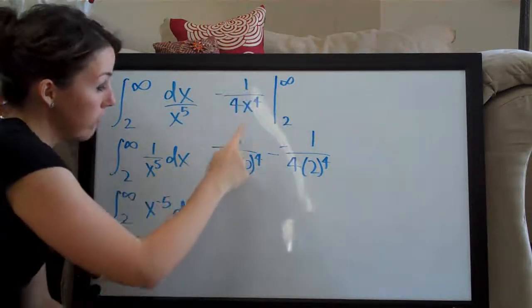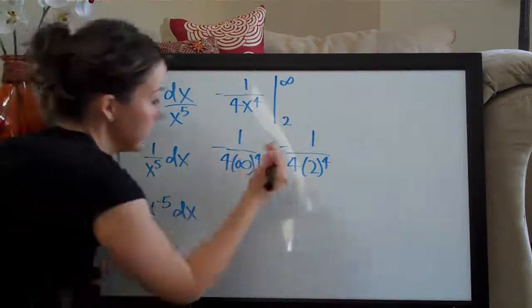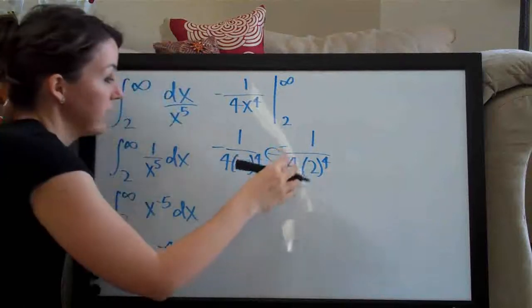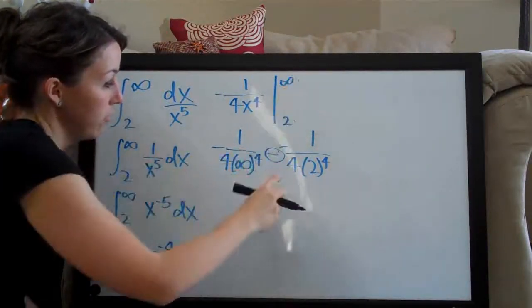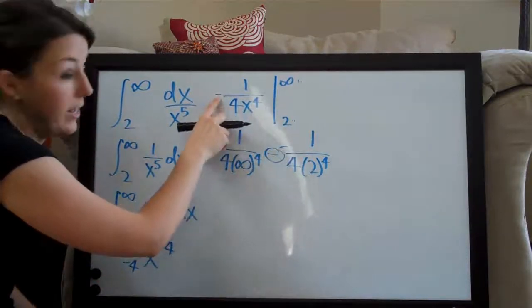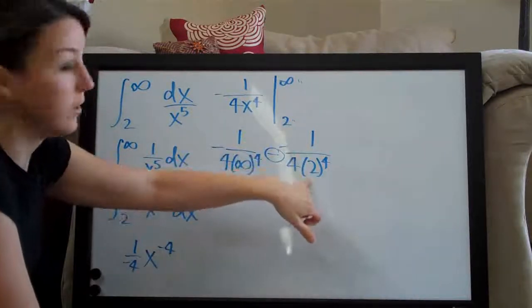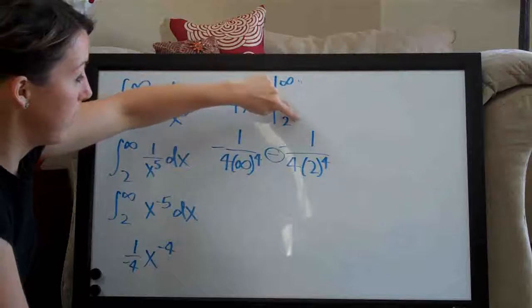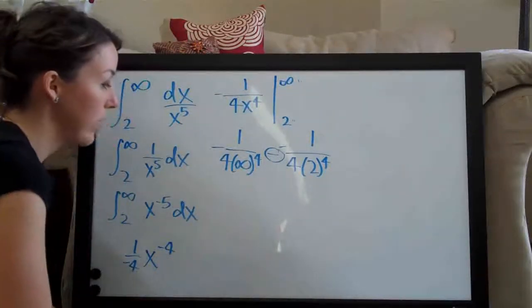So we've got our negative one over four times infinity to the fourth and then you always subtract. This is always, you're subtracting when you plug this in from when you plug this in. So we've got minus and then of course another minus sign because this is still a negative out here. So minus and then this whole thing again but with a two plugged in. So it's this one minus this one. So now that we've done that, we can evaluate this.